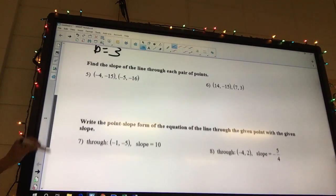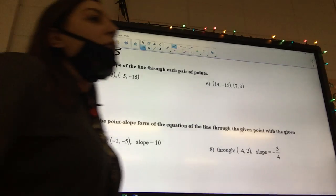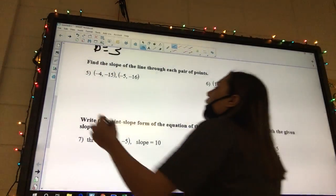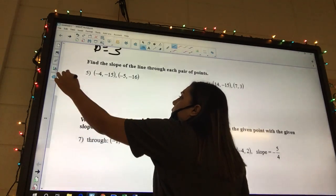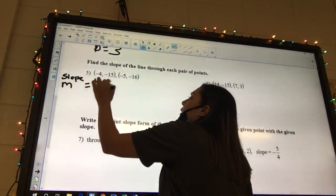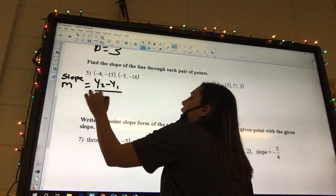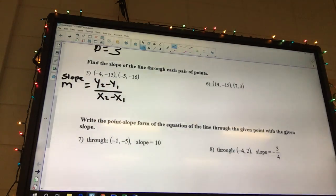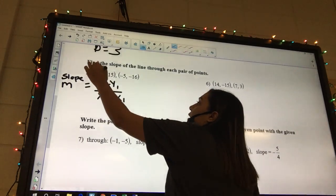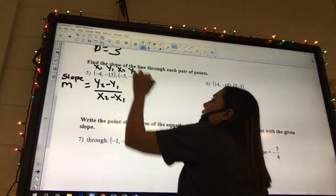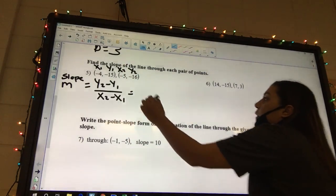Number 5. It says find the slope. You find the slope when you only have 2 points. So we have slope. This is slope. And we need to use the formula y2 minus y1 over x2 minus x1. So we can label these: x1, y1, x2, y2.